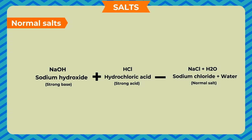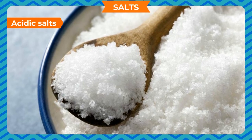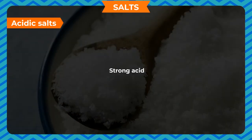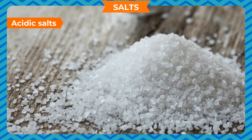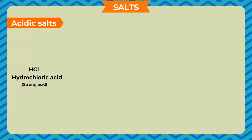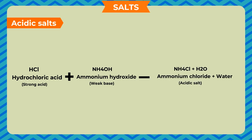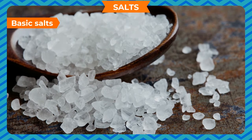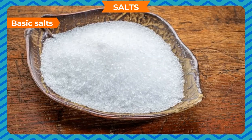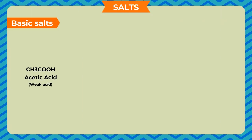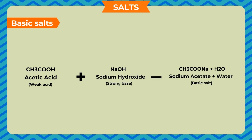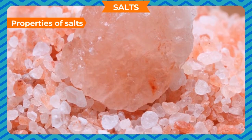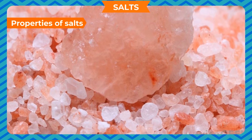Acidic salts are formed from a strong acid and a weak base — they contain hydrogen ions in their formula. HCl (strong acid) + NH4OH (weak base) → ammonium chloride (acidic salt) + water. Basic salts are formed from a weak acid and a strong base — they have hydroxyl ions in their formula. Acetic acid (weak acid) + NaOH (strong base) → sodium acetate (basic salt) + water.